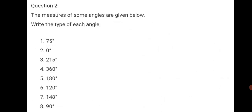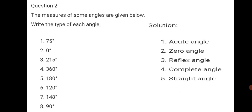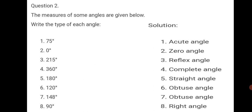Question number 2: the measures of some angles are given below — write the type of each angle. 75 degree is less than 90, so it is an acute angle. 0 degree is a zero angle. 215 degree is a reflex angle — more than 180, less than 360. 360 degree is a complete angle. 180 degree is a straight angle. 120 degree is an obtuse angle — more than 90, less than 180. 148 degree is also an obtuse angle. 90 degree is a right angle. This completes question number 2.